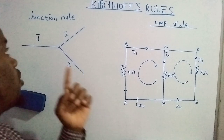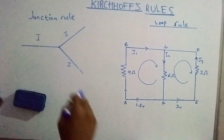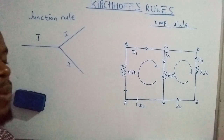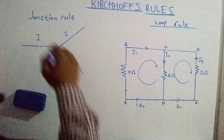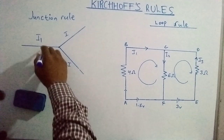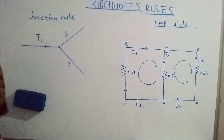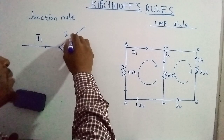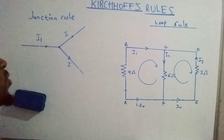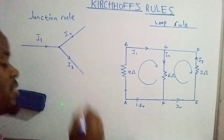The first rule is actually called the junction rule. As you can see, there is something more like a junction here, and then there's a fork pathway. Imagine current — which we are calling current one — coming from one end and then entering the junction, where it splits into two branches: one branch carries current two, and that one carries current three.